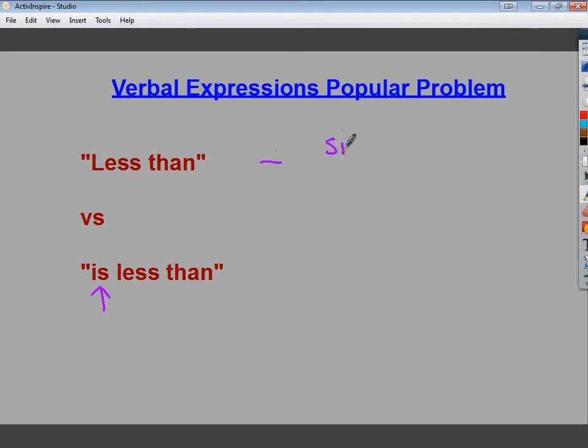So 6 less than x, or than a number, whatever it happens to be. Well, I know that less equals minus. I know that this than here tells me to flip the order of the numbers and variables. So the 6 would go here and the x would go in front.